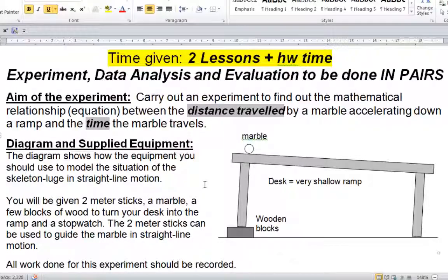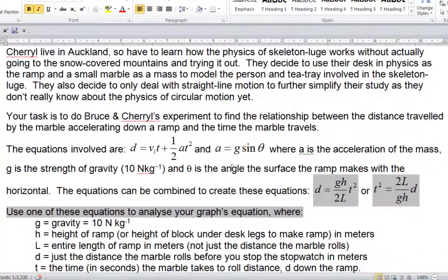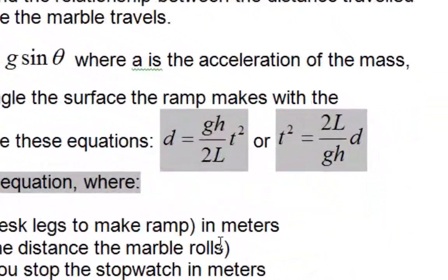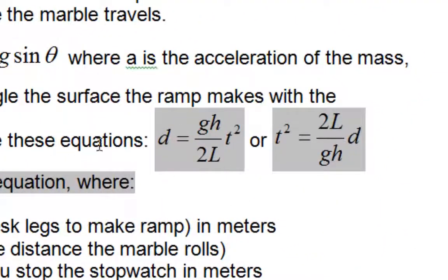We're going to go back to the experiment. If we graphed the distance traveled and the time on the same graph, we would not get a straight line. You always get a curve. In the experiment, there will always be these equations that are given to you.